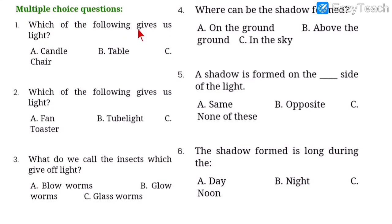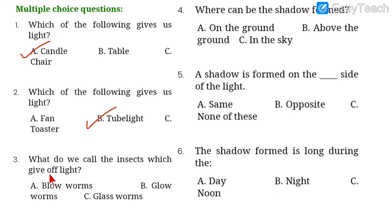Continuing the multiple choice questions. Number one: which of the following gives us light — candle, table, or chair? A candle is the object that gives us light. Number two: which of the following gives us light — fan, tube light, or toaster? We get light from tube light, as we discussed. Number three: what do we call the insects which give off light — glow worms, blow worms, or glass worms?